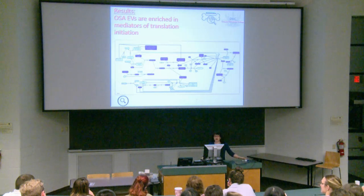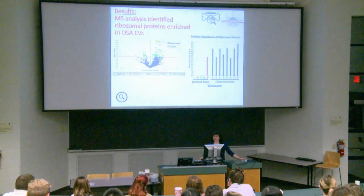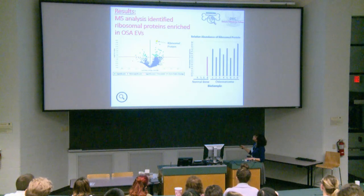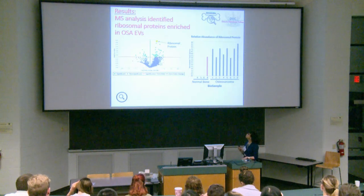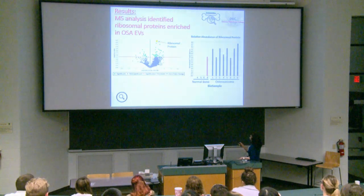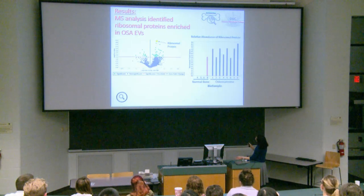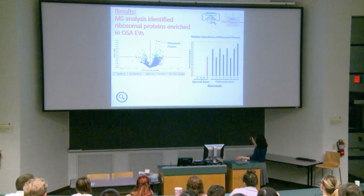This shows we have an increase of proteins especially involved in initiation of translation in osteosarcoma vesicles. A volcano plot shows the ribosomal protein enriched in osteosarcoma compared to normal bone — normal bone samples mostly have none or very low levels, while osteosarcoma samples all have detectable levels. One ribosomal protein previously shown to be involved in human osteosarcoma is ribosomal protein S3.